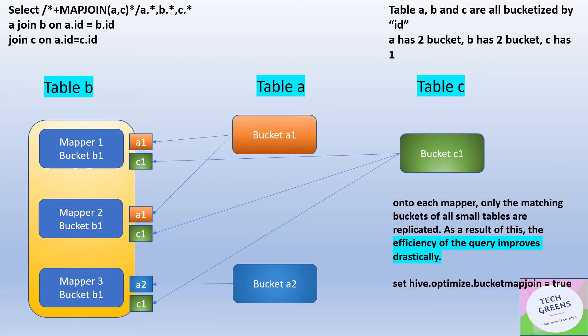If you see table one, we are depicting the mapping stage with table B. If you see Mapper 1, which is running the bucket B1 of table B, so here only the first bucket of the other two tables is fetched. If you see here, A1 is the first bucket of table A, and C1 is the first bucket of table C.